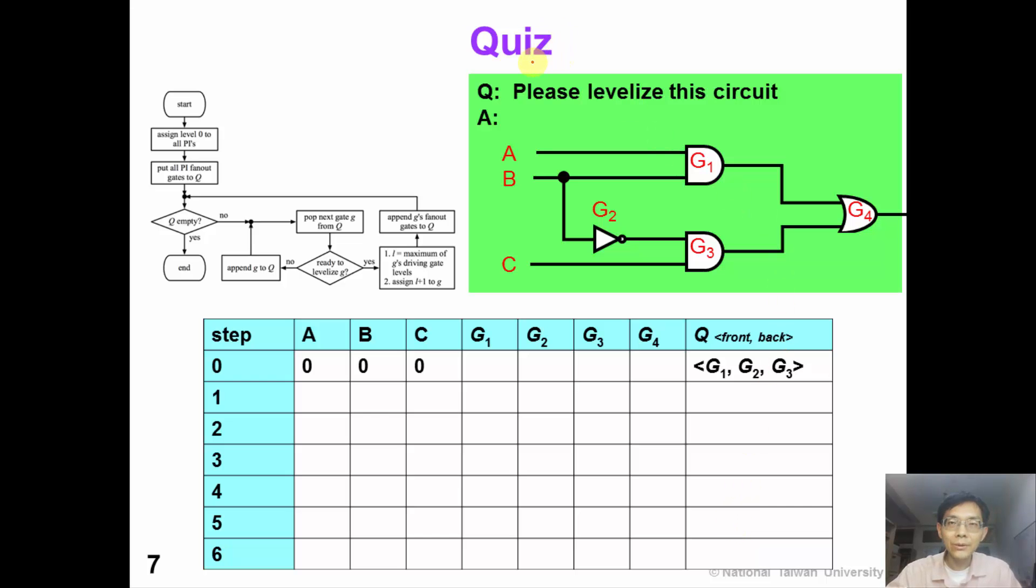Now it's time for you to do an exercise. Please levelize this circuit using the same algorithm. Please now pause the video and fill in this table, given the queue: G1, G2, and G3.